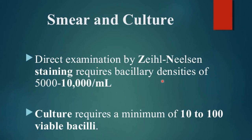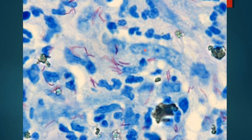For smear examination, at least 10,000 acid fast bacilli per ml of sputum must be present to be detectable. For culture, a minimum of 10 to 100 viable bacilli per ml are required. In ZN staining, MTB appear as red, rod-shaped, curved and beaded organisms against a blue background. Mycobacterium bovis and atypical mycobacteria show smooth, homogenous staining with no beading. Blue pus cells are also visible.